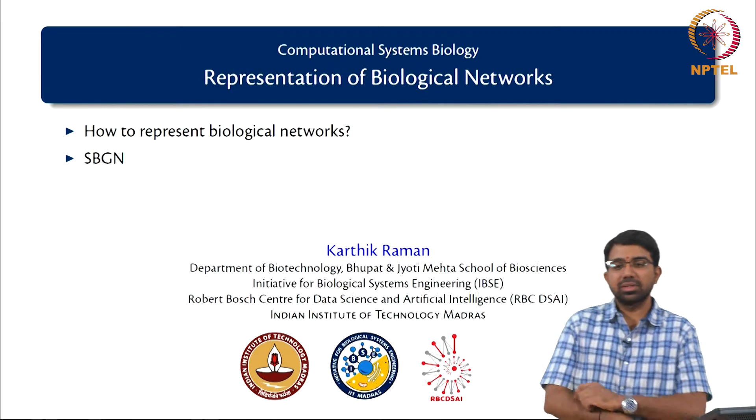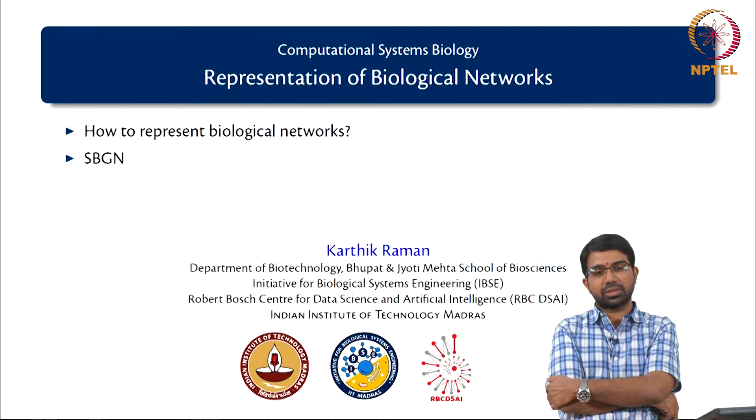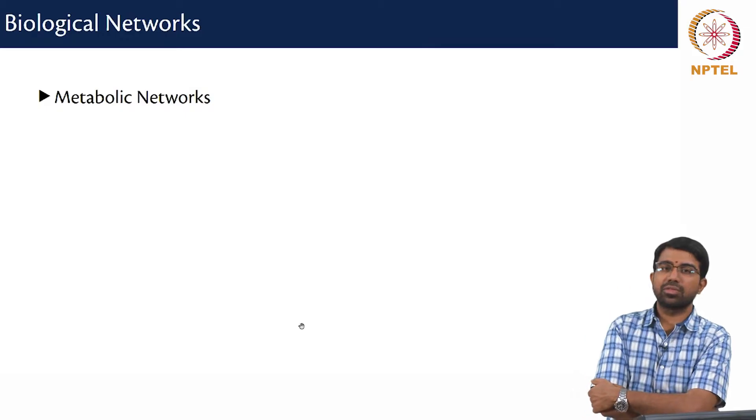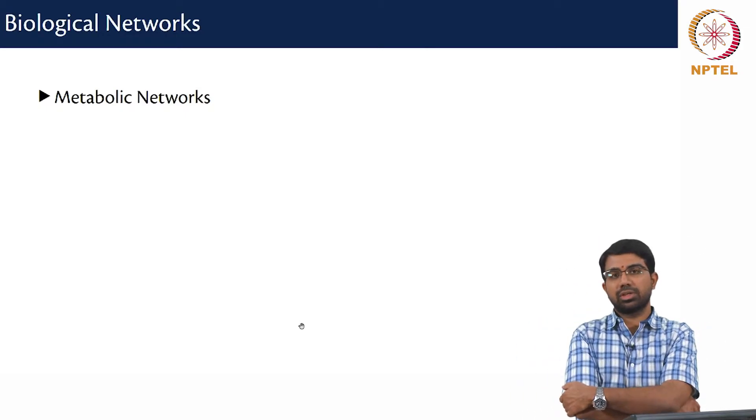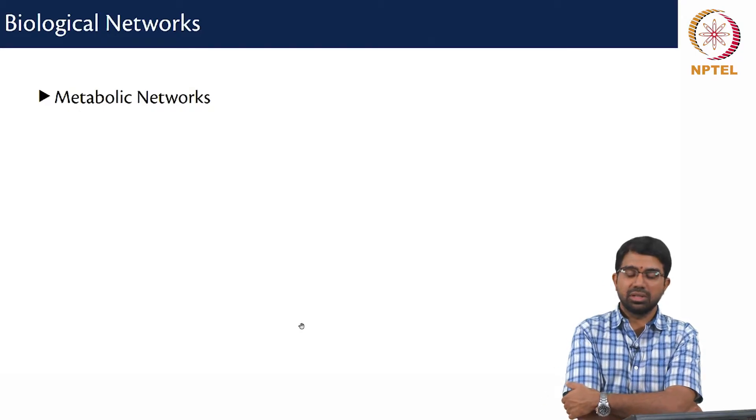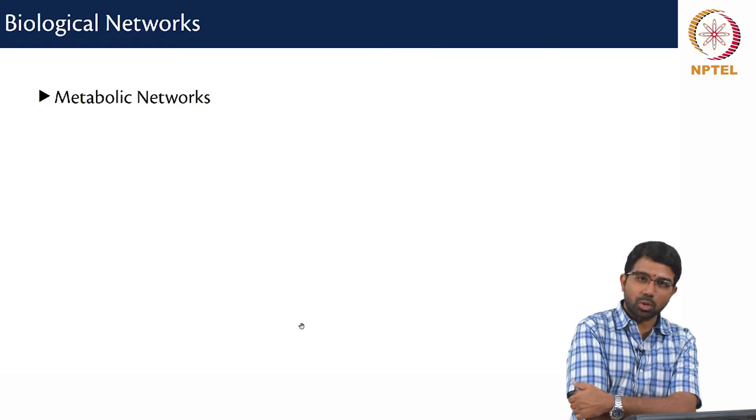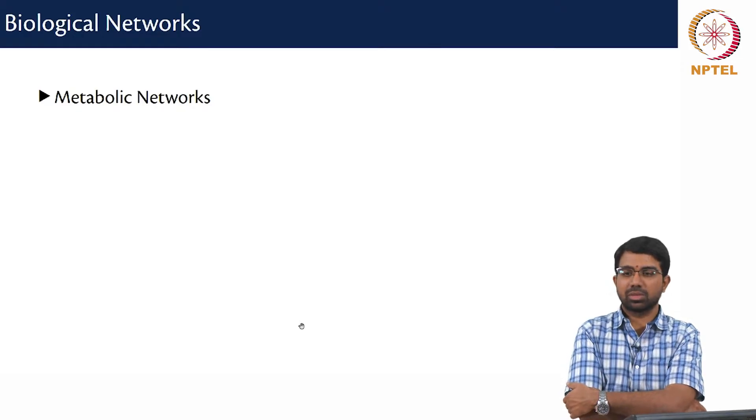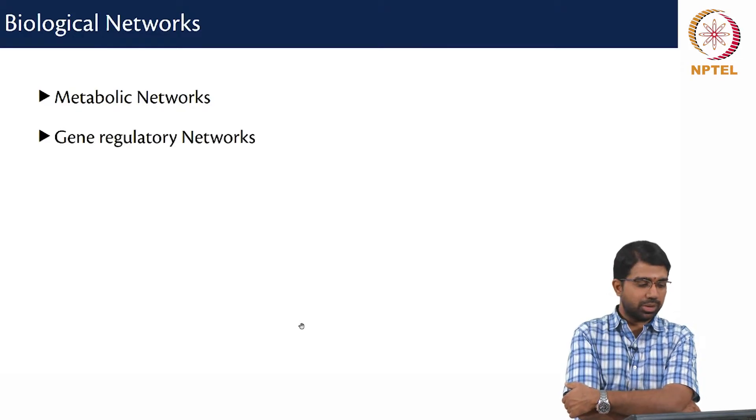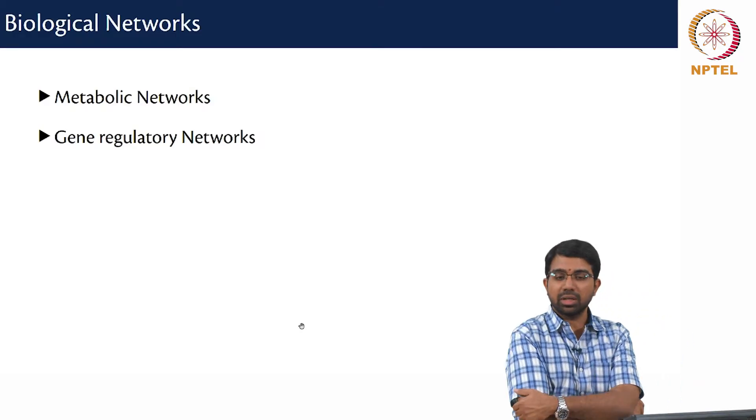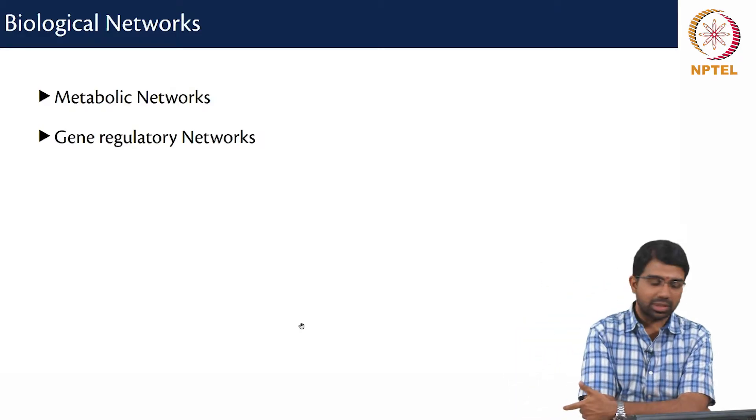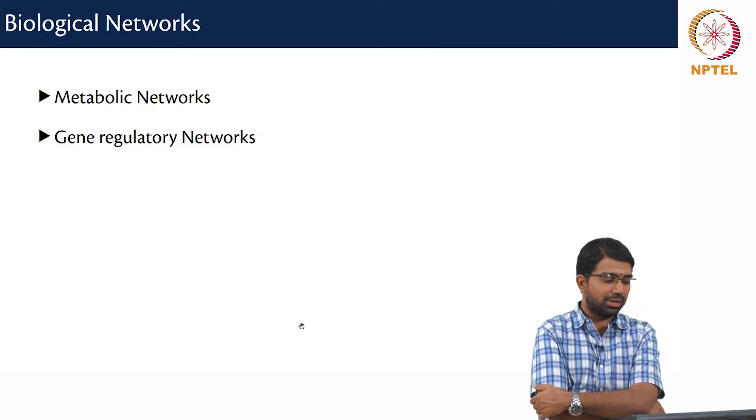How do you represent biological networks? So there are different types of networks that you observe in biology. You have metabolic networks which essentially catalogue the interactions between genes, proteins, in fact mostly proteins, metabolites and so on, so which reaction produces what. Then gene regulatory networks which essentially talk about which gene regulates what other gene. We will look at these in much more detail a little later on.